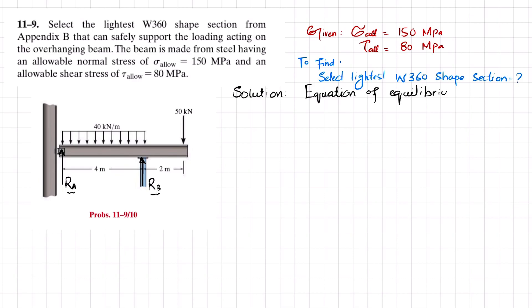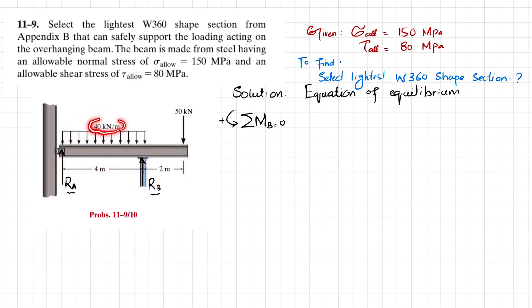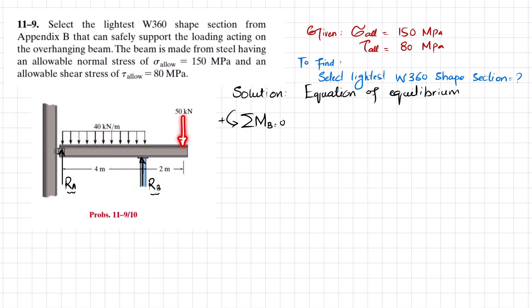Applying the first equilibrium condition: the sum of all moments about point B equals zero, taking counterclockwise as positive. About point B, RA acts at a perpendicular distance of 4 meters and produces clockwise rotation. The distributed load converts to a point load of 40×4 acting at 2 meters — counterclockwise, positive. The 50 kN load at a perpendicular distance of 2 meters produces clockwise rotation — negative.